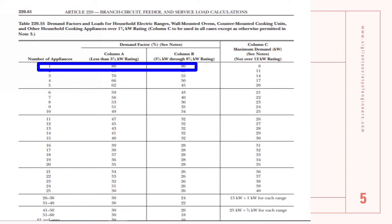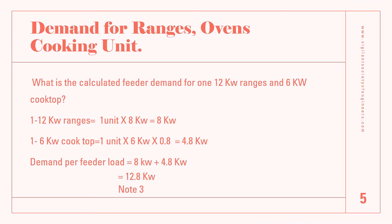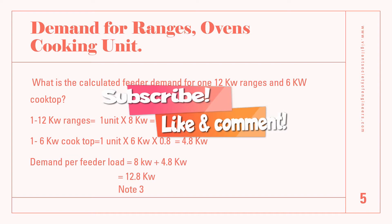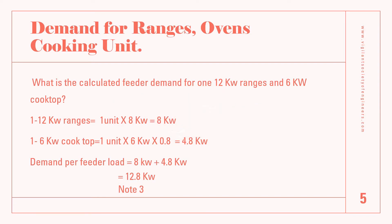From column B, the demand factor is 0.8, or 80 percent. So that value for the 6 kilowatt cooktop is 4.8 kilowatt. The total demand for this feeder supplying one 12 kilowatt range and one 6 kilowatt cooktop is found by adding both demand values: 8 kilowatt plus 4.8 kilowatt, resulting in a total demand of 12.8 kilowatt.